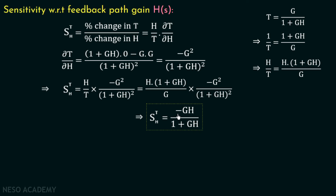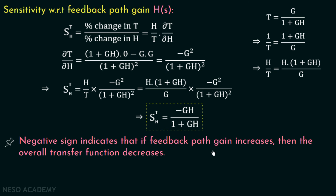This negative sign indicates that if the feedback path gain increases, then the overall transfer function decreases. This is the significance of the negative sign, and we will understand this better with the help of examples in upcoming lectures. Now we have both expressions: the sensitivity with respect to forward path gain S_T^G and the sensitivity with respect to feedback path gain S_T^H.